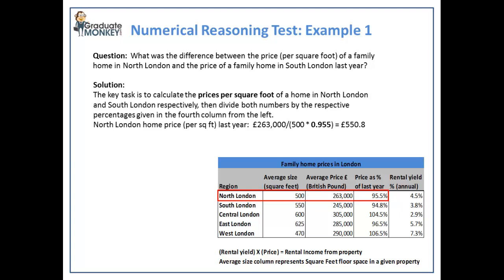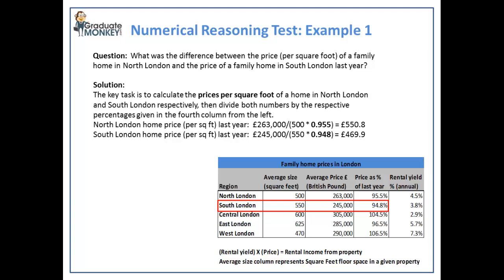Then we work out the South London home prices per square foot for last year: 245,000 pounds divided by (550 times 0.948), which equals 469.90 pounds.